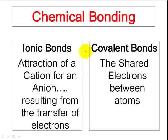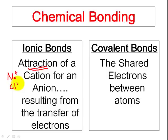Ionic bonding, as we saw before, is the attraction — that was the key word I wanted everyone to get from ionic bonds — the attraction of a cation for an anion. It was the attraction between ions. We had an ion such as Na+ and also Cl-, and it was the attraction between the plus and the minus.